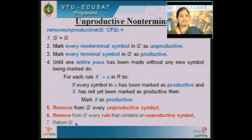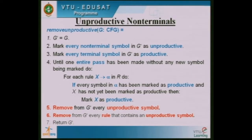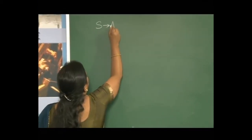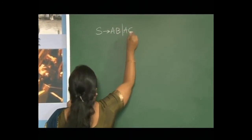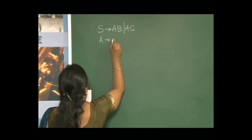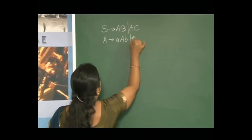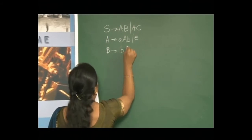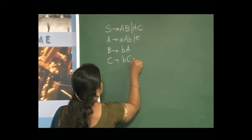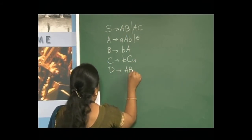Return the grammar, which is now free from unproductive non-terminals. For example, consider a grammar with rules: S → AB | AC, A → AAB | ε, B → BA, C → BCA, and D → AB.